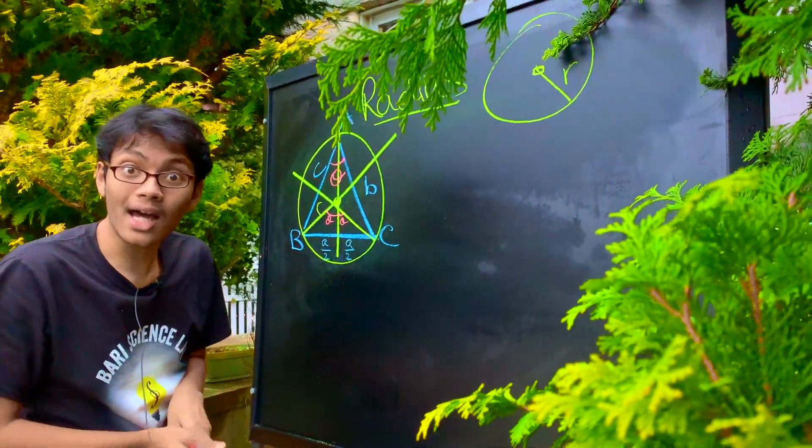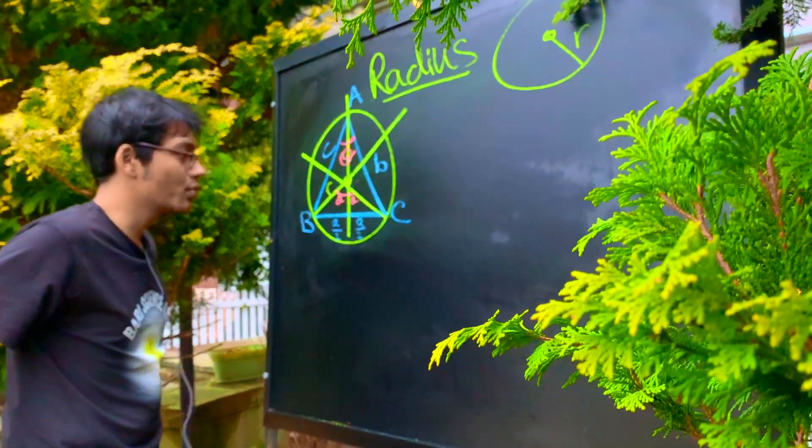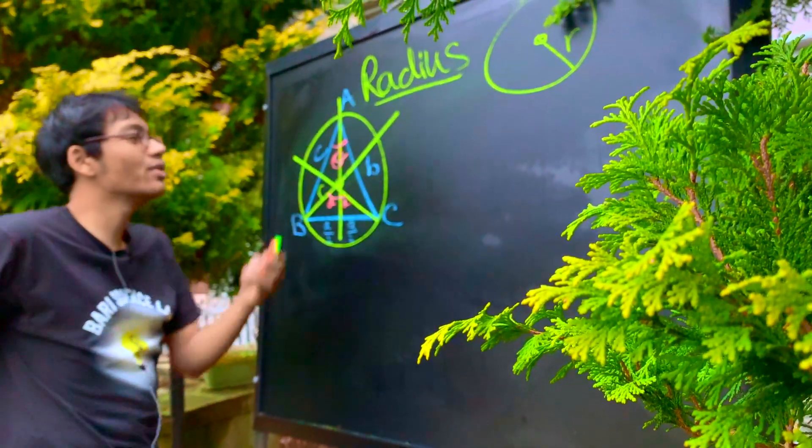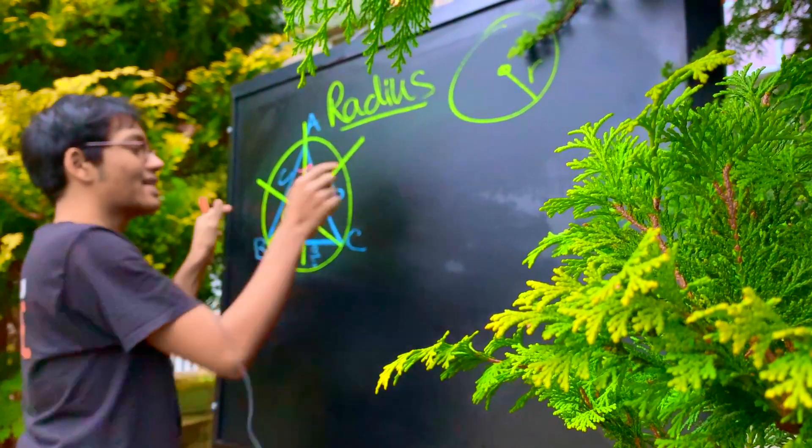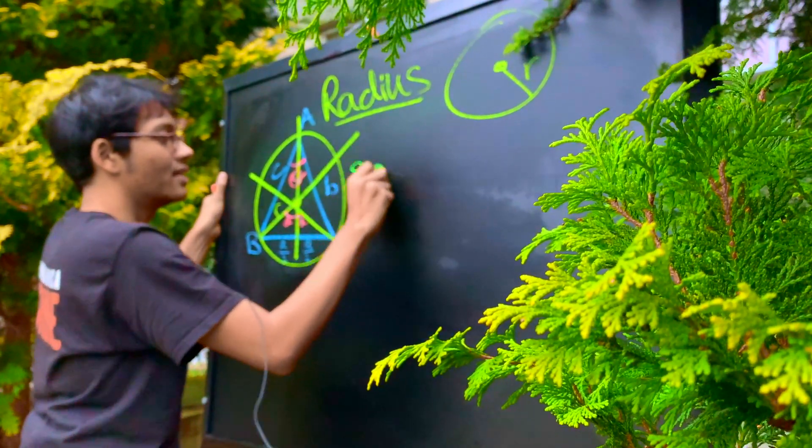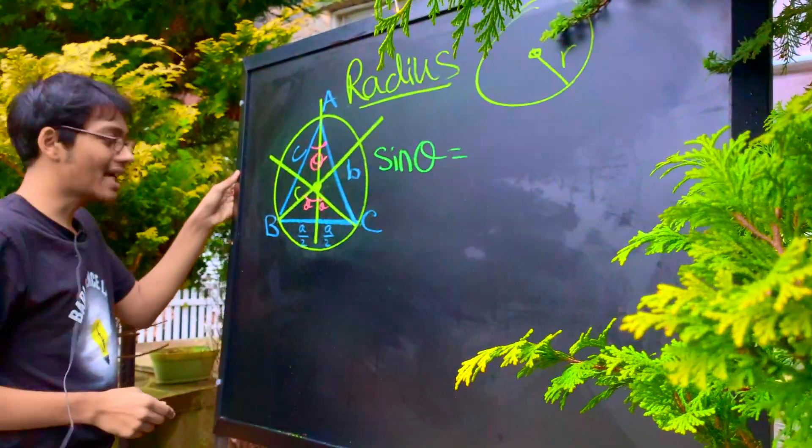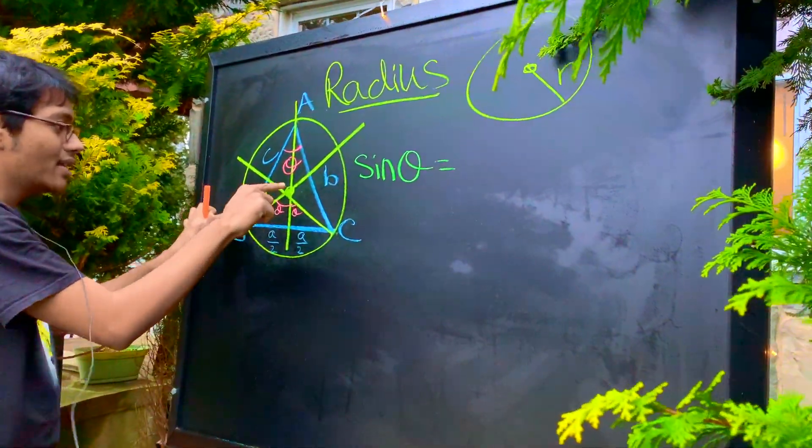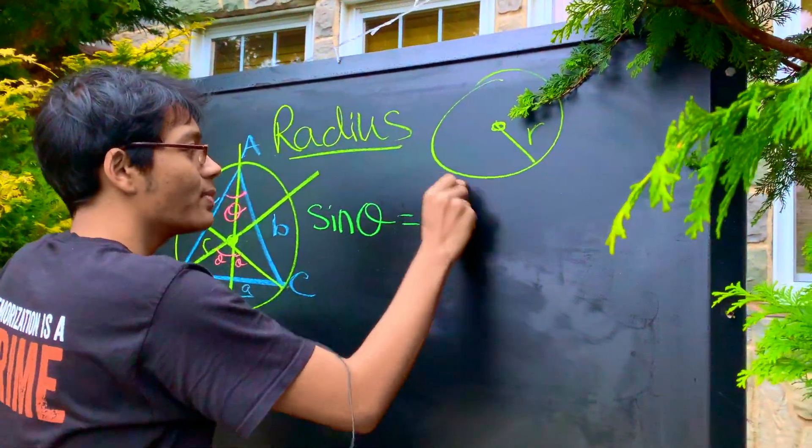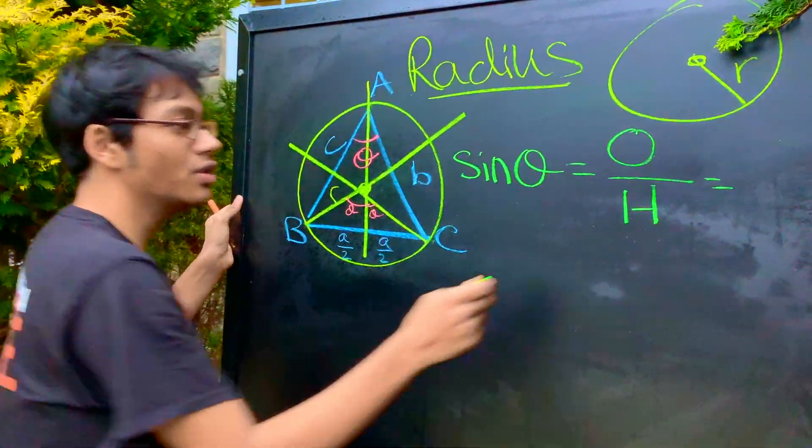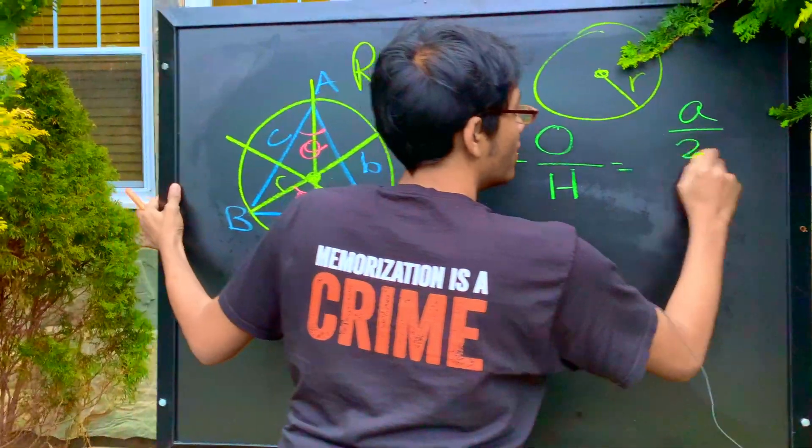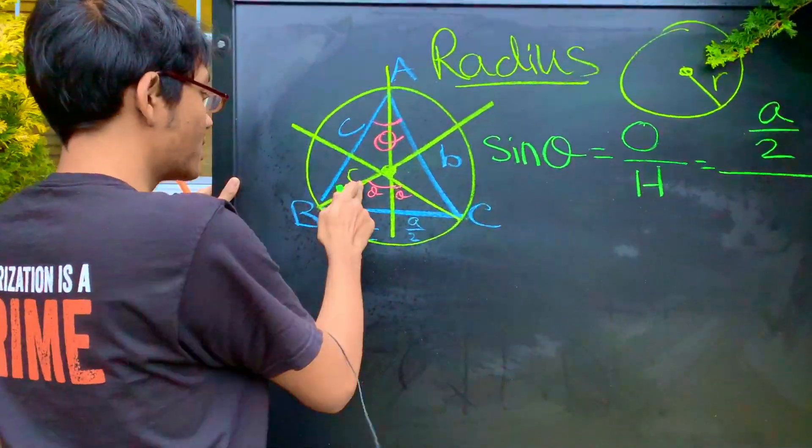Okay, well now we can use some trigonometry to our advantage. What trigonometry can we use to find the radius? Check it out. We can use sine of theta. What is sine of theta? Sine of theta is opposite over hypotenuse. What's our opposite? It's a over two. What's our hypotenuse? It's r.